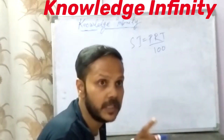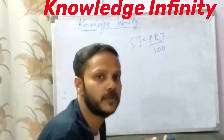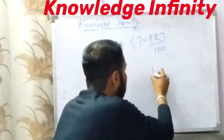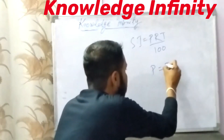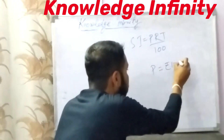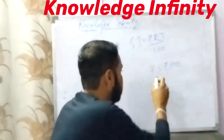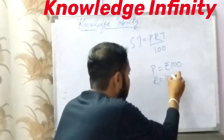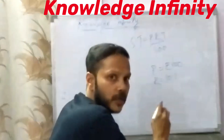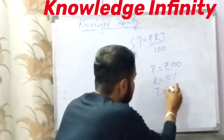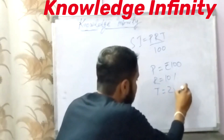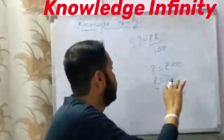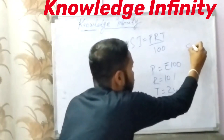Now, what is the difference between simple interest and compound interest? Let me explain with the help of an example. Let us take a principal of 100 rupees deposited in a bank at a rate of 10 percent for a time of two years. When you calculate simple interest for the whole tenure: